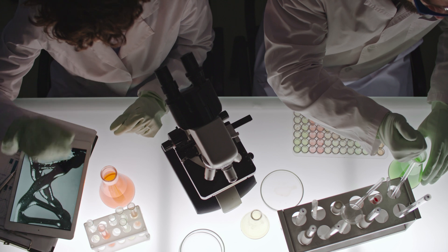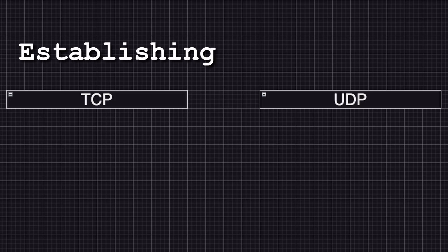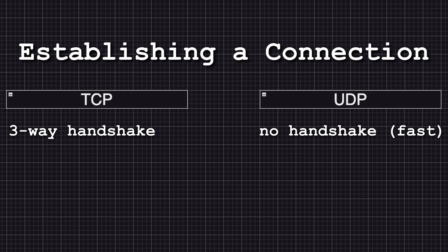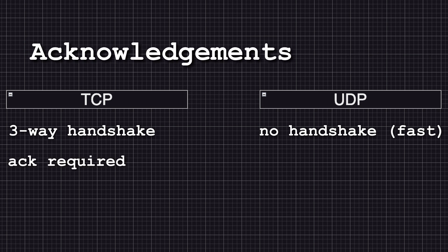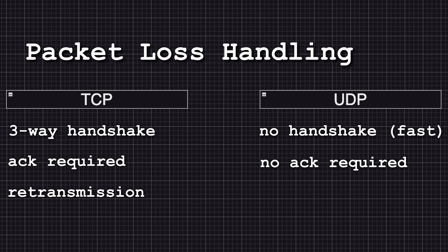Let's take a look at the pros and cons of TCP and UDP. Establishing a connection: TCP requires a three-way handshake before data transmission begins, while UDP sends data directly without establishing a connection — saving time. Acknowledgements: TCP requires each packet to be acknowledged by the receiver, introducing additional round-trip delays, whereas UDP does not require acknowledgements, allowing data to flow continuously. Packet loss handling: TCP retransmits lost packets, while UDP ignores packet loss and continues sending data, providing faster delivery at the expense of reliability.